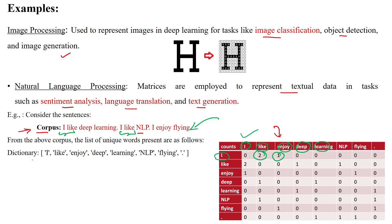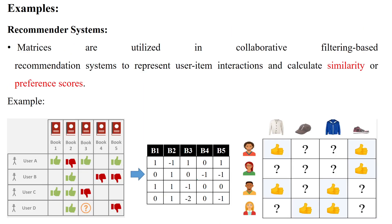The corpus is represented using a dictionary, where words in the dictionary are represented as rows and columns. In recommending systems, the matrix is used in a collaborative filtering based approach to represent user-item interactions and calculate similarity or preference scores. The number of columns are represented as items and the number of rows are represented as users — that's what user-item interactions means.